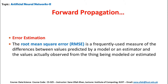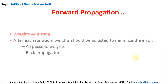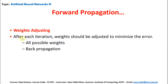Error estimation: the root mean square error (RMSE) is a frequently used measure of the difference between values predicted by a model and the values actually observed. How do we adjust weights in the forward propagation? After each iteration, weights should be adjusted to minimize the error. One approach is to try all possible weights; the second is back propagation — coming back to check and adjust the weights.